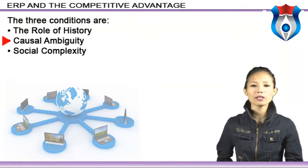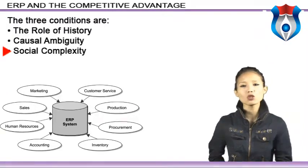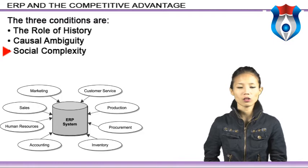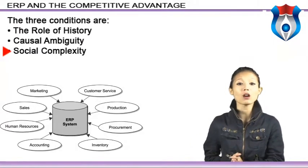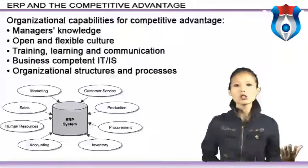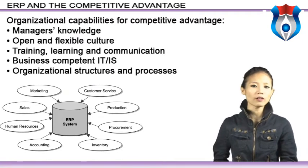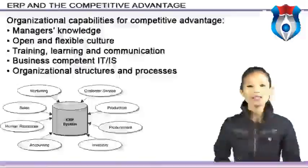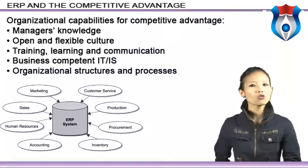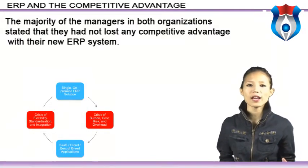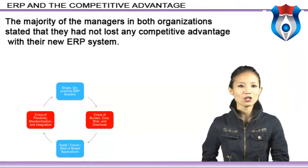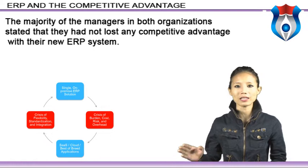Social complexity: a resource may be so intertwined in social networks, cultures, and relationships that it will be very hard for a competitor to deconstruct those social structures. Extensions to this framework have been made in later years, aimed at organizational and business resources that can lead to a competitive advantage based on ERP systems. Organizational capabilities for competitive advantage include: managers' knowledge of the organization and the ERP system, top management support, open and flexible culture, training, learning and communication, business-competent IT and IS, and organizational structure and processes. The majority of managers stated that they had not lost any competitive advantage with their new ERP system, though important structures or processes had to be reshaped — but none of these had eliminated the competitive advantage.